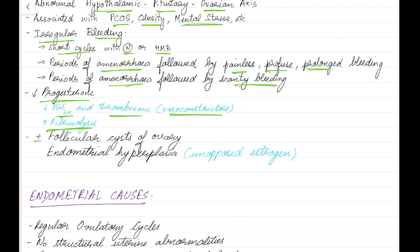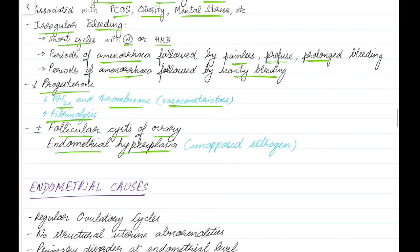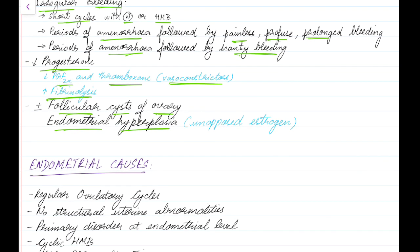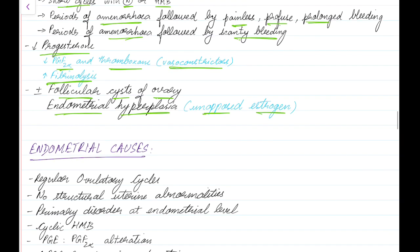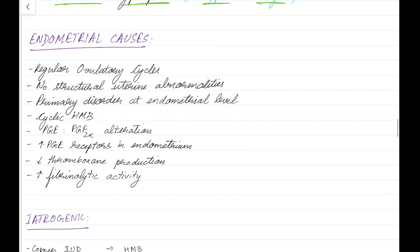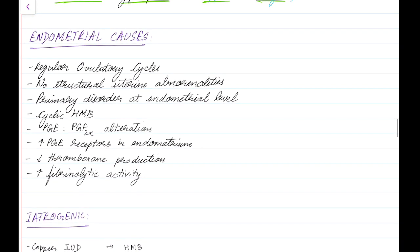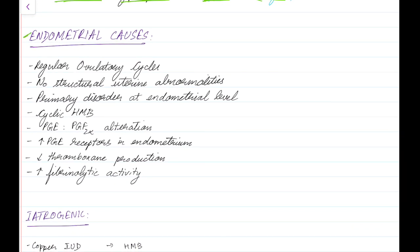Ovulatory dysfunction may or may not be associated with follicular cysts of the ovary and endometrial hyperplasia. Remember, endometrial hyperplasia develops due to unopposed estrogen, which is usually present in ovulatory dysfunction. Now coming to the next non-structural abnormality — endometrial causes.